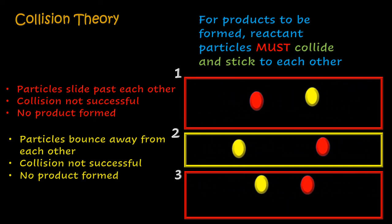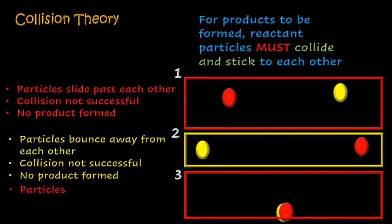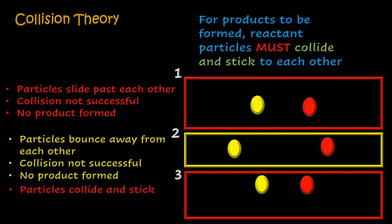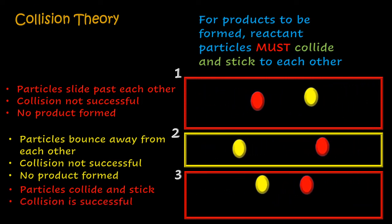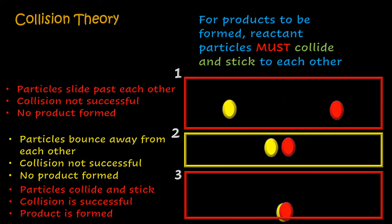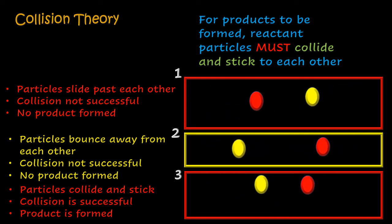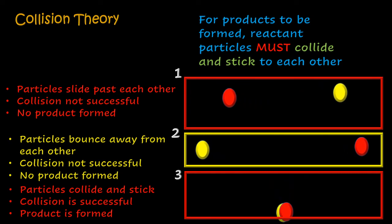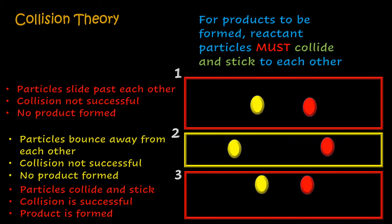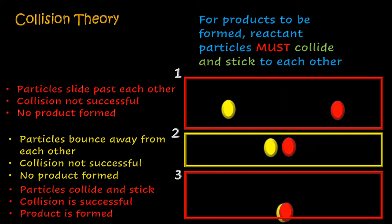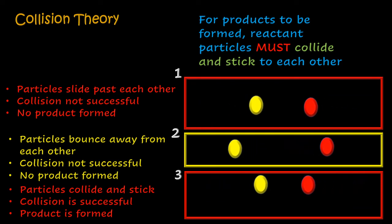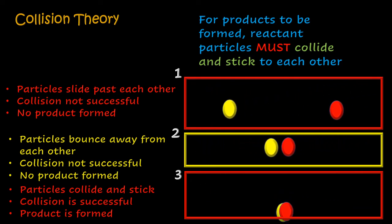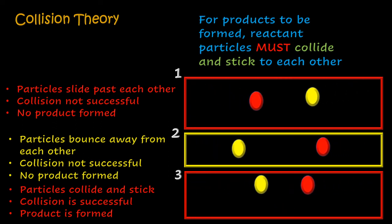In scenario three, the particles collided and they stuck together. We can then say that the collision is successful, and for that reason a product is formed. When it comes to collision, it is not just a matter of collision occurring — the collision must occur and must lead to the reactant particles sticking to each other to form the product. That way, a chemical reaction is said to have taken place.